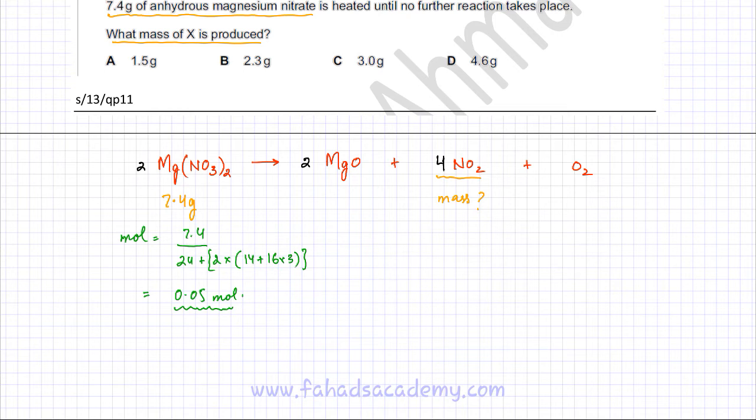Now if you look at the equation, the ratio in which magnesium nitrate and NO2 gas is produced is 2 ratio 4. So if you have 2 moles of magnesium nitrate, 4 moles of NO2 is produced, which basically means that the amount of NO2 is going to be twice the amount of magnesium nitrate. So it's 2 ratio 4 or 1 ratio 2.